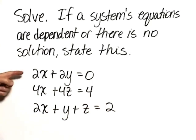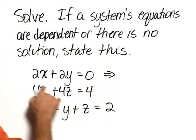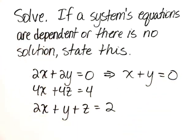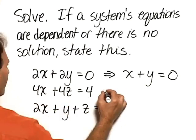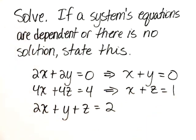First of all, let's look at this equation and realize that we can simplify it by dividing both sides by 2 with the result x plus y equals 0. And in this equation, we can divide both sides by 4 with the result x plus z equals 1.